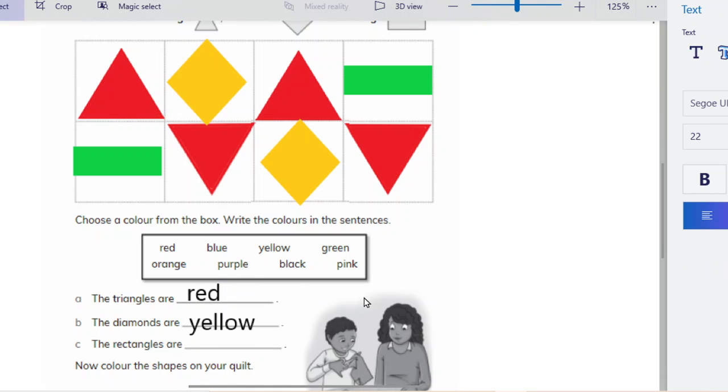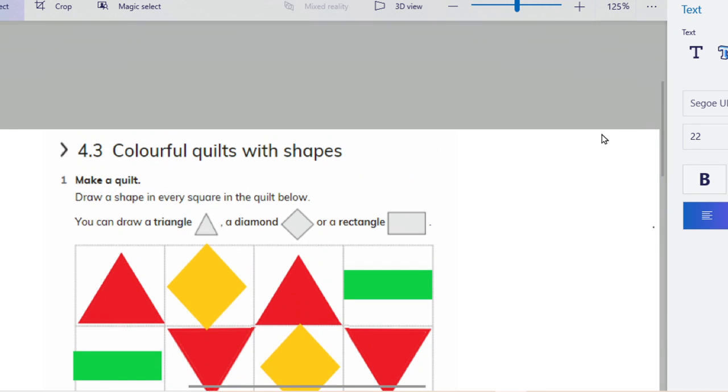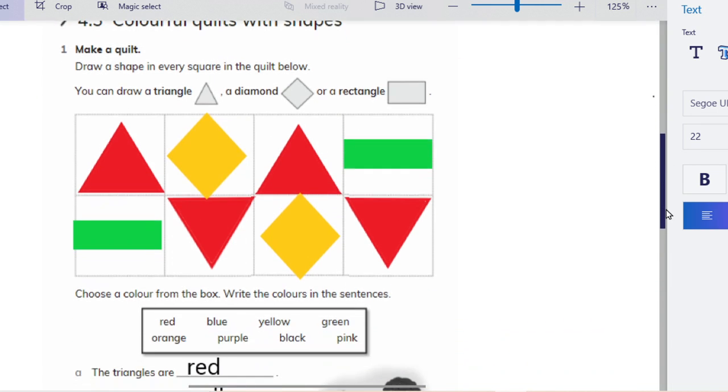And the rectangles are green. I'm not going to write that now. The colors are here. You can choose any of these colors. You can choose any of these shapes and make your own quilt.